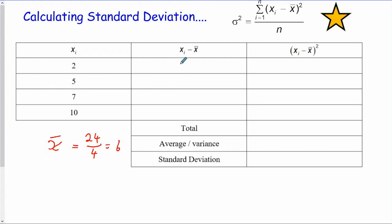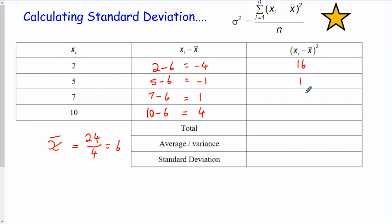Next, take each data item and subtract the mean: 2 minus 6, 5 minus 6, 7 minus 6, and 10 minus 6 — giving negative 4, negative 1, 1, and 4. If we averaged those we'd get zero, which is why we square them. Squaring gives 16, 1, 1, and 16. We add them up to get 34, then divide by 4 to get 8.5 — that's our variance. The standard deviation is the square root of 8.5.